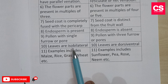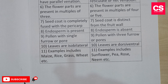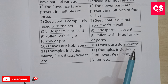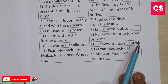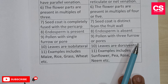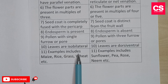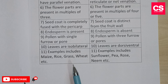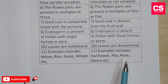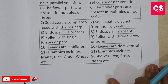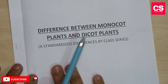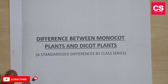The tenth difference: leaves in monocot plants are iso-bilateral. In dicot plants the leaves are dorsiventral. Examples of dicot plants include sunflower, pea, and rose. These are the basic differences between monocot plants and dicot plants.